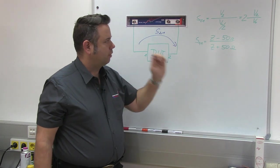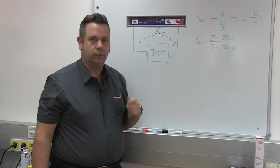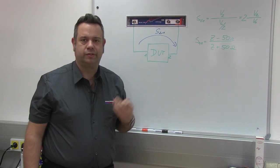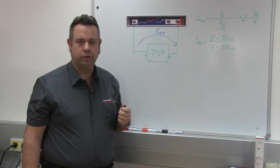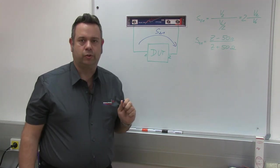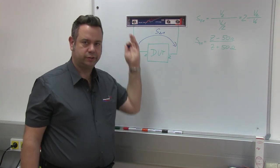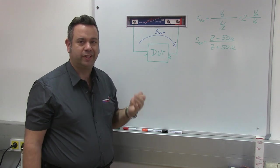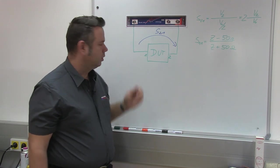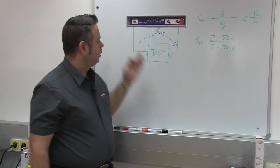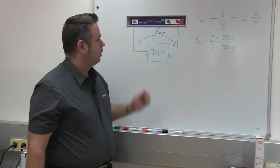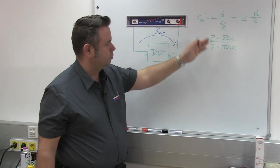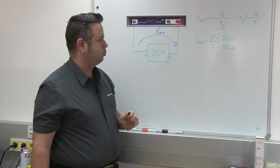Why do we use half of the source voltage and not the original voltage? If we assume that the device under test has a 50 ohm input, we would have half of the source voltage at its input since the source is a 50 ohm source. But since we want a measurement which is independent from the input impedance, we use the source voltage divided by 2. So this is the formula for S21.